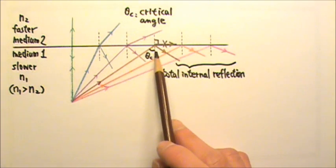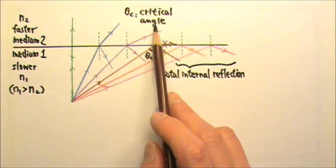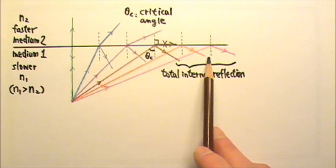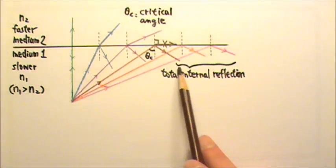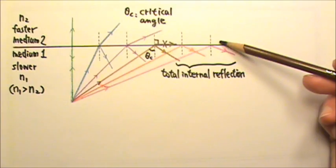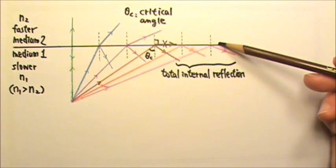This angle of incidence is called the critical angle. Beyond the critical angle, we would only have total internal reflection. No refraction at all. No light can go through to the other side.